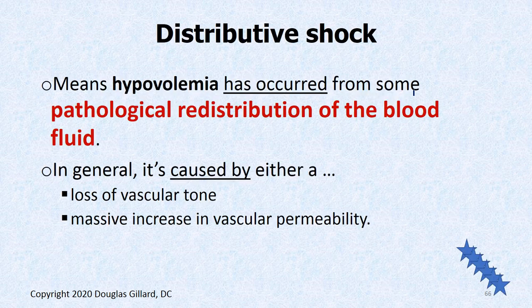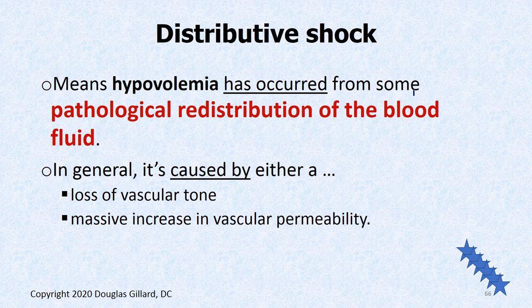Distributive shock means hypovolemia has occurred because of some pathological redistribution of blood fluid. Generally there are two things that cause this: a loss of tone of the arterioles and venules. Remember, arterioles and venules have a thick tunica media and are in a state of vasoconstriction to prevent over-pressurizing capillaries. If they lose that tone and arterioles pop wide open, you get way too much pressure through the capillaries, dumping too much blood fluid into the interstitium, unable to suck it back — going into shock because there goes your blood volume.